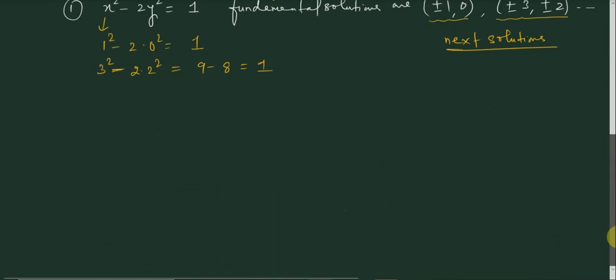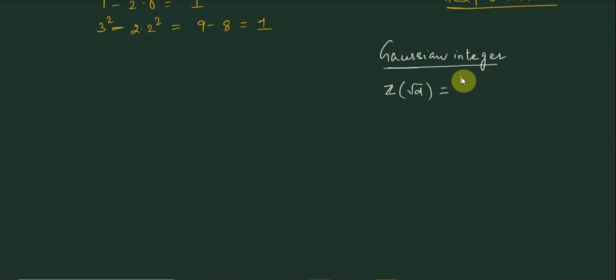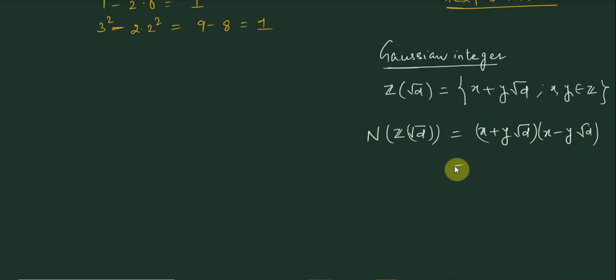What is a Gaussian integer? The Gaussian integer Z(√d) is defined as x + y√d, where x and y are integers. Now, the norm of this Gaussian integer Z(√d) is defined as (x + y√d) multiplied by its conjugate (x - y√d), which gives x² - dy².